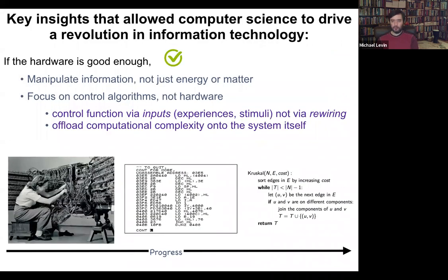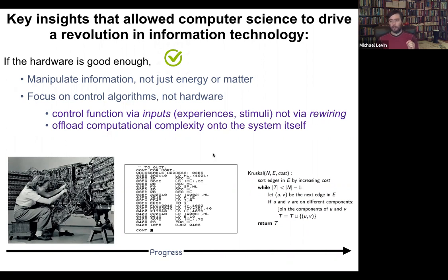In computer science, there was an interesting journey from programming in the 1940s and 50s — in order to get the computer to do something different, you physically had to rewire it, rearrange the hardware. But what computer scientists realized is that if your hardware is good enough — and I'm going to argue that biological hardware is definitely good enough — you can reprogram the machine without touching the hardware, basically by giving it stimuli or experiences, inputs. That allows you to program in a much higher level language, not drowned in the details of the hardware, but taking advantage of high-level programming strategies to get very complex kinds of outcomes.